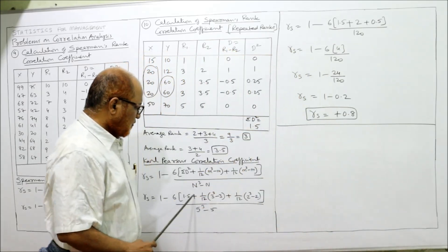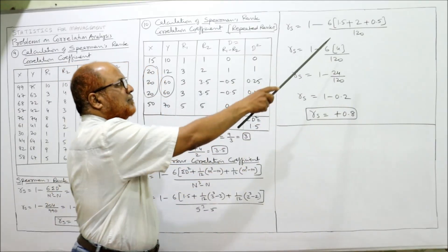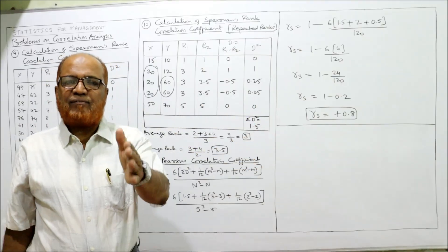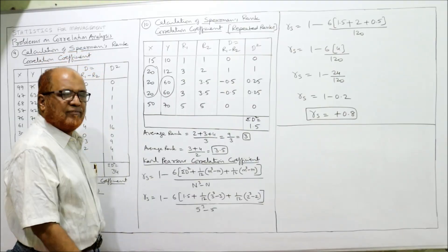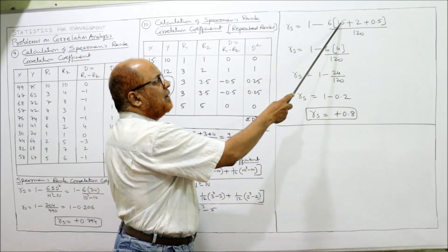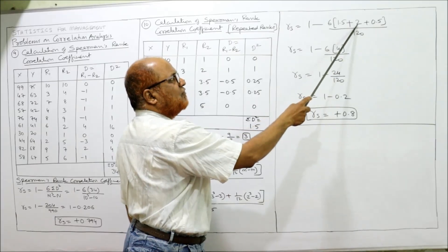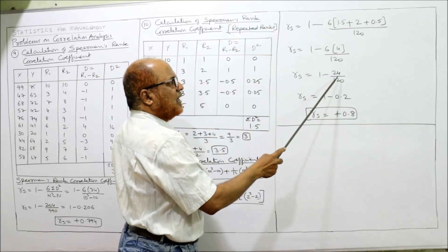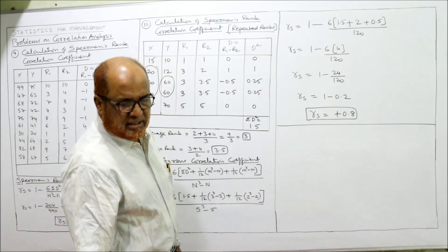Now: RS = 1 − 6(1.5 + 2 + 0.5) / (5³ − 5) = 1 − 6 × 4 / (125 − 5) = 1 − 24 / 120 = 1 − 0.2 = 0.8. This is the Spearman's rank correlation coefficient.